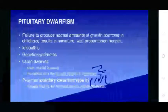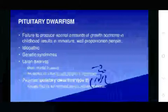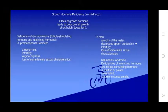Pituitary dwarfism involves failure to produce normal amounts of growth hormone, resulting in well-proportioned short stature. It may be idiopathic, genetic, or due to a defect of the growth hormone receptor (Laron-type dwarfism, type 2), where tissue does not respond well to growth hormone. Growth hormone deficiency in childhood leads to poor overall growth and short stature.